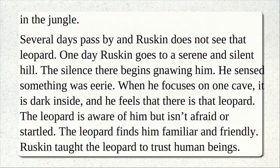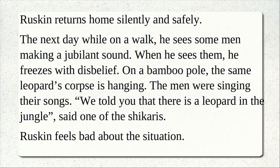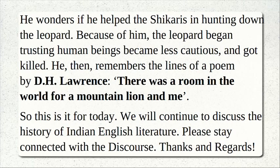Several days passed and Ruskin didn't see the leopard. One day, going to a serene and silent hill, the silence began gnawing at him and he sensed something was eerie. Focusing on a dark cave, he felt the leopard was inside. The leopard was aware of him but wasn't afraid or startled — it found him familiar and friendly. Ruskin had taught the leopard to trust human beings. He returned home silently and safely. The next day on his walk, he saw some men making jubilant sounds. He froze with disbelief — on a bamboo pole, the same leopard's corpse was hanging. The Shikaris said, 'We told you there is a leopard in the jungle.' Ruskin felt terrible, wondering if he had helped the Shikaris by teaching the leopard to trust humans, making it less cautious — and thus getting it killed.